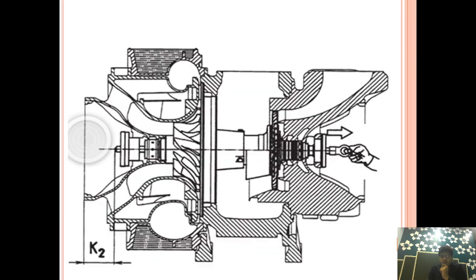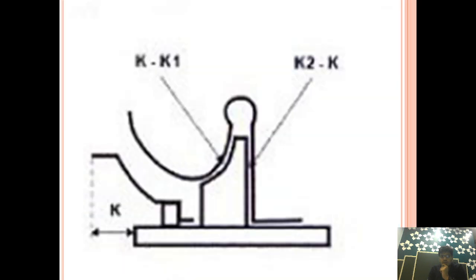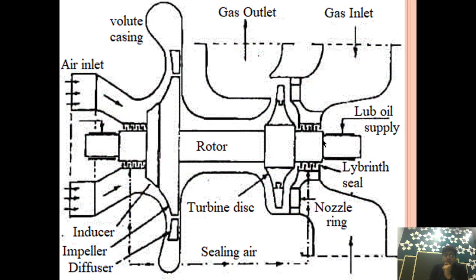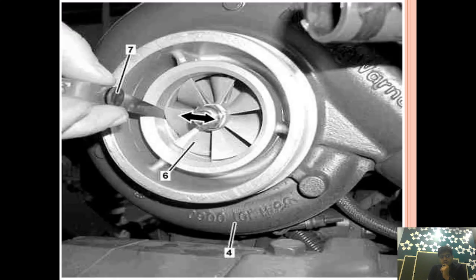There should be adequate clearance between these components; otherwise, if the clearance is not proper, it may get stuck. To ensure that, we put a feeler gauge — as you can see here, we are putting a feeler gauge and checking the radial clearance on each side of the turbine plate. This ensures that when the component gets heated up, it will have sufficient clearance and does not seize.